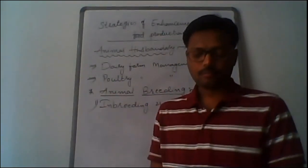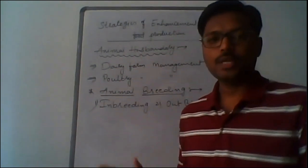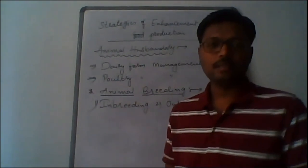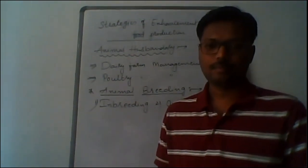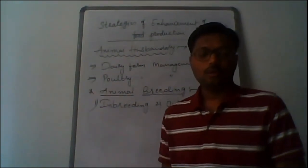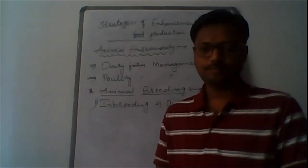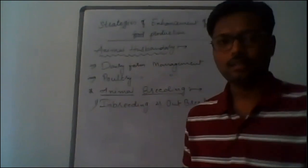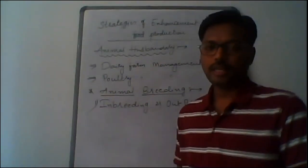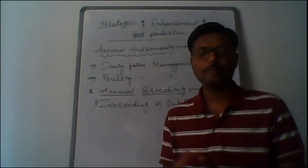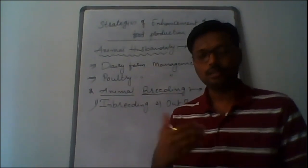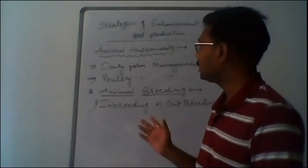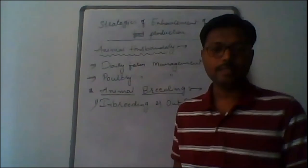Good morning students. Today we are going to start a new chapter — the 9th chapter: 'Strategies of Enhancement in Food Production.' This is a chapter of the 3rd unit. There are 3 chapters in Unit 3: the 8th is Human Health and Diseases, the 9th is Strategies of Enhancement in Food Production, and the 10th is Microbes in Human Welfare.